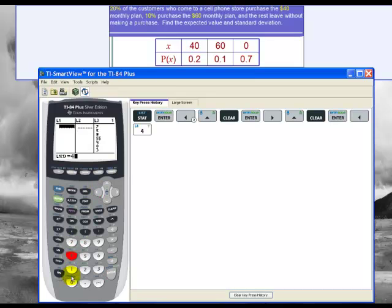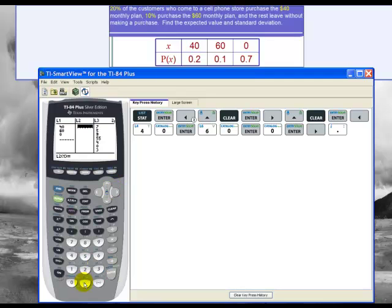Now that they're cleared out I can enter the data. For list 1 I type in 40, then 60, and then 0. List 2 contains the probabilities. So list 2 has 0.2, then 0.1, and then 0.7. Remember list 1 contains the x values or the outcome values and list 2 contains the probabilities of those outcomes occurring.